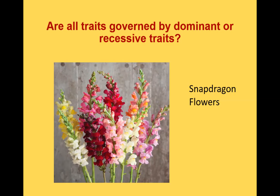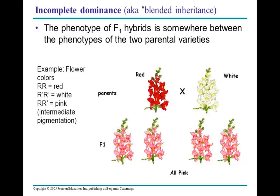If you take a look at these snapdragon flowers on this slide, you may notice they come in a variety of colors. The red color is a dominant trait, while the white color is a recessive trait, and the offspring produced when you cross these two plants together will actually produce the pink color we see in snapdragon bouquets. So what exactly is this?